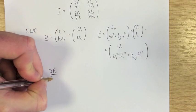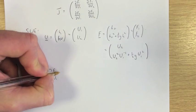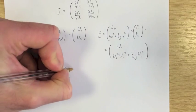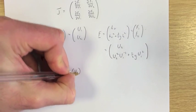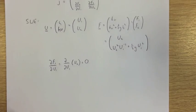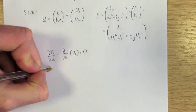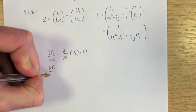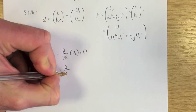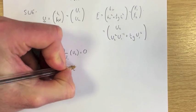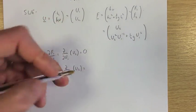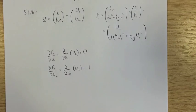Now I can calculate the partial derivatives. The partial derivative of F1 with respect to U1 is the partial derivative of U2 with respect to U1, which is 0. The partial derivative of F1 with respect to U2 is the partial derivative of U2 with respect to U2, which is 1.